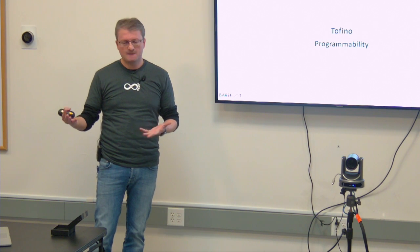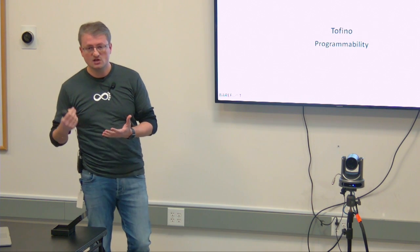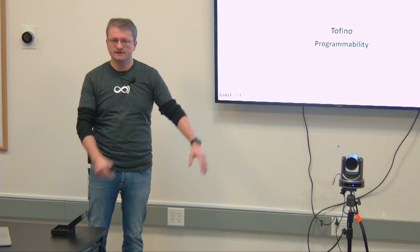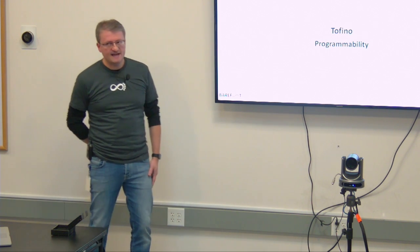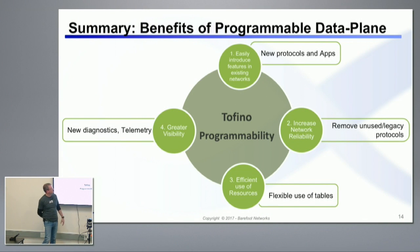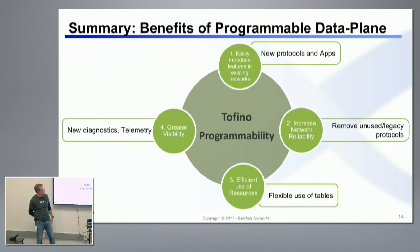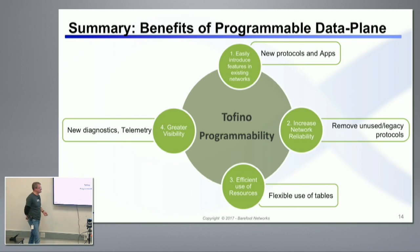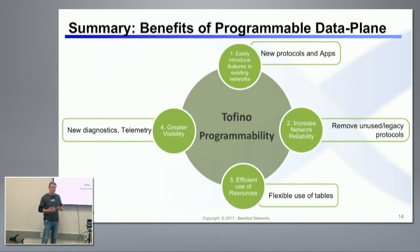We also support something called resilient hashing in the chip. If you add a member to the pool, there is no impact on traffic being hashed to the other existing members. That goes back to the programmability slide — you can add new applications, those advanced applications you want to develop. In the upcoming demo, we'll show how you can change your feature set in the chip and how the P4 program can be changed on the fly to adapt to specific use cases.